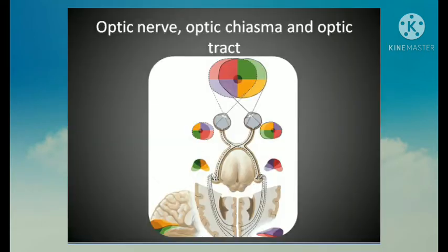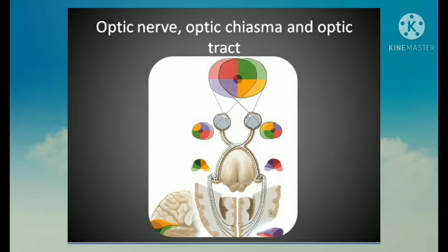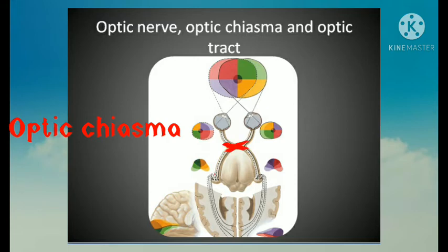Next we are going to learn about the optic nerve, optic chiasma, and optic tract. The optic nerve comes out by piercing the sclera 3 mm medial to the posterior pole of the eyeball. In man it contains about one million fibers, which are the axons of ganglion cells of the retina. It passes through the optic canal to reach the middle cranial fossa, where it joins its counterpart of the other side to form the optic chiasma above the roof of the pituitary fossa.